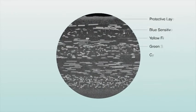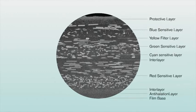Photographic film can be as thin as 20 microns, but it consists of more than 10 layers. Each layer consists of microparticles. To ensure that the particles in each layer function properly, Fujifilm employs a variety of technologies.